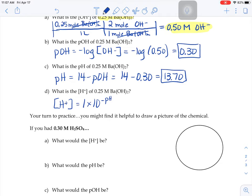The power, the exponent of your hydrogen ion concentration is going to be 13.7.